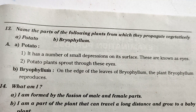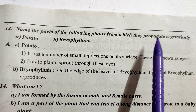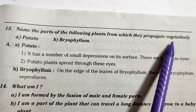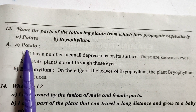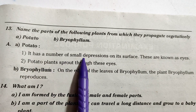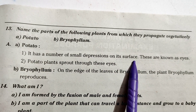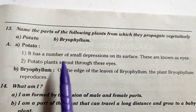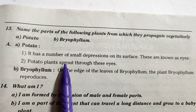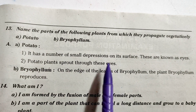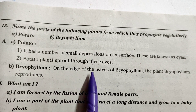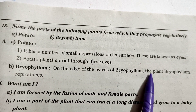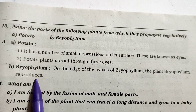Name the parts of the following plants from which they propagate vegetatively. Potato: it has a number of small depressions on its surface called eyes; potato plants sprout through these eyes. Bryophyllum: the plant bryophyllum reproduces from buds on the edges of its leaves.